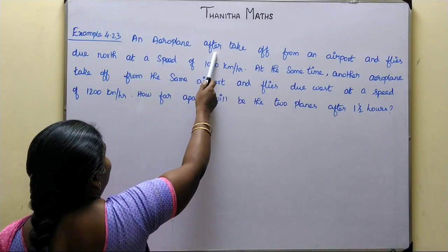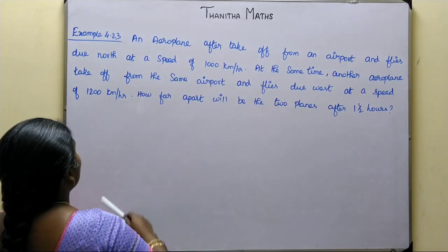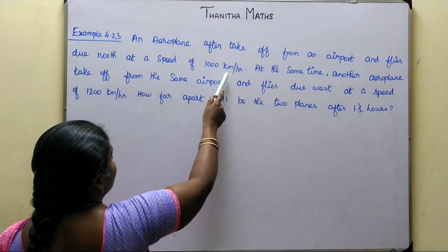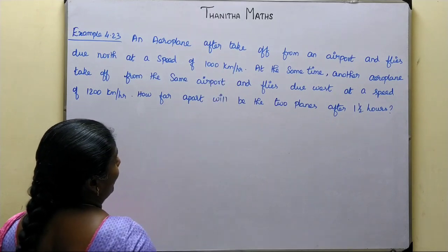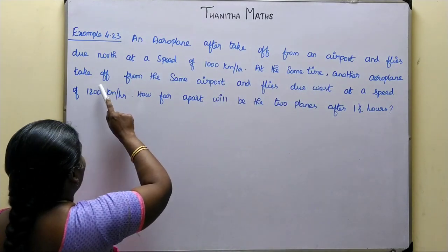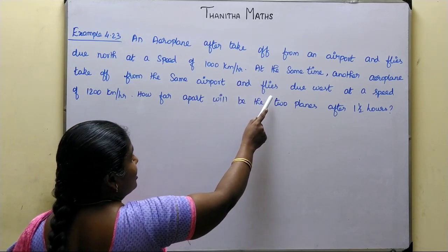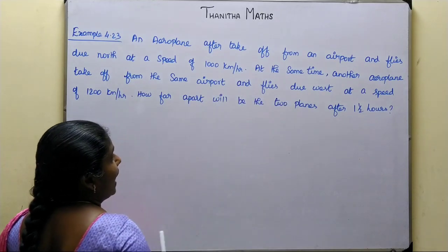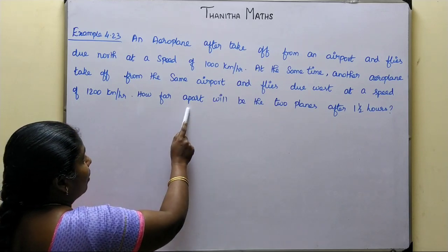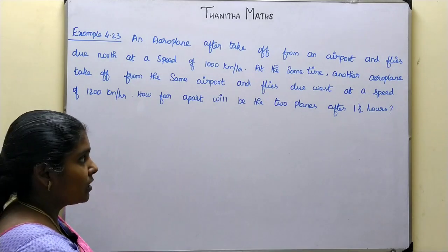An aeroplane takes off from an airport and flies due north at a speed of 1000 km per hour. At the same time, another aeroplane takes off from the same airport and flies due west at a speed of 1000 km per hour. How far apart will the two planes be after one and a half hours?